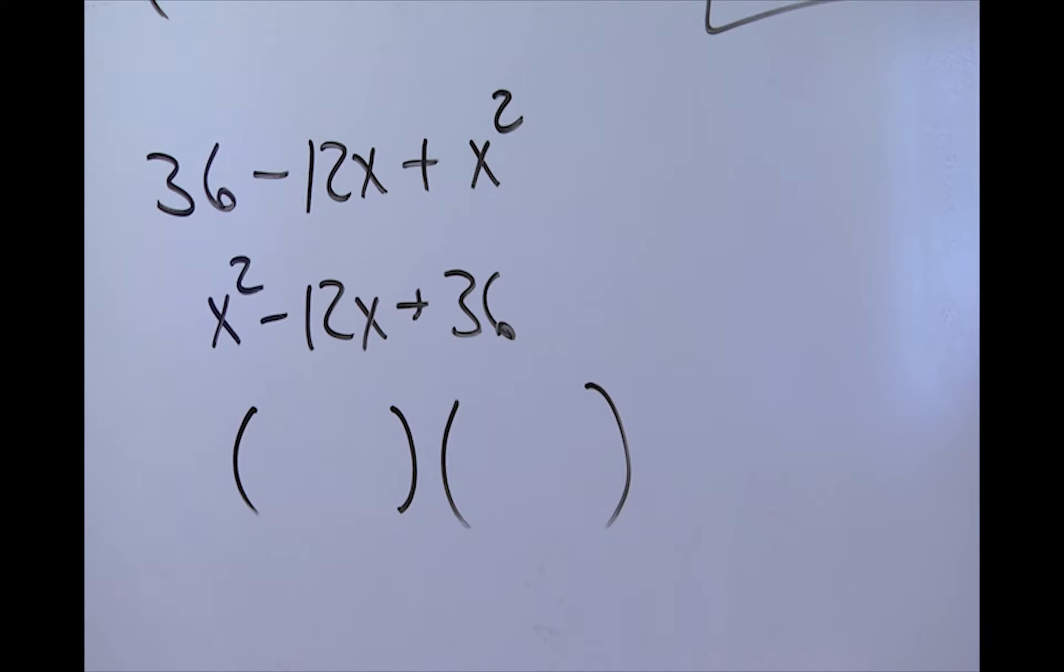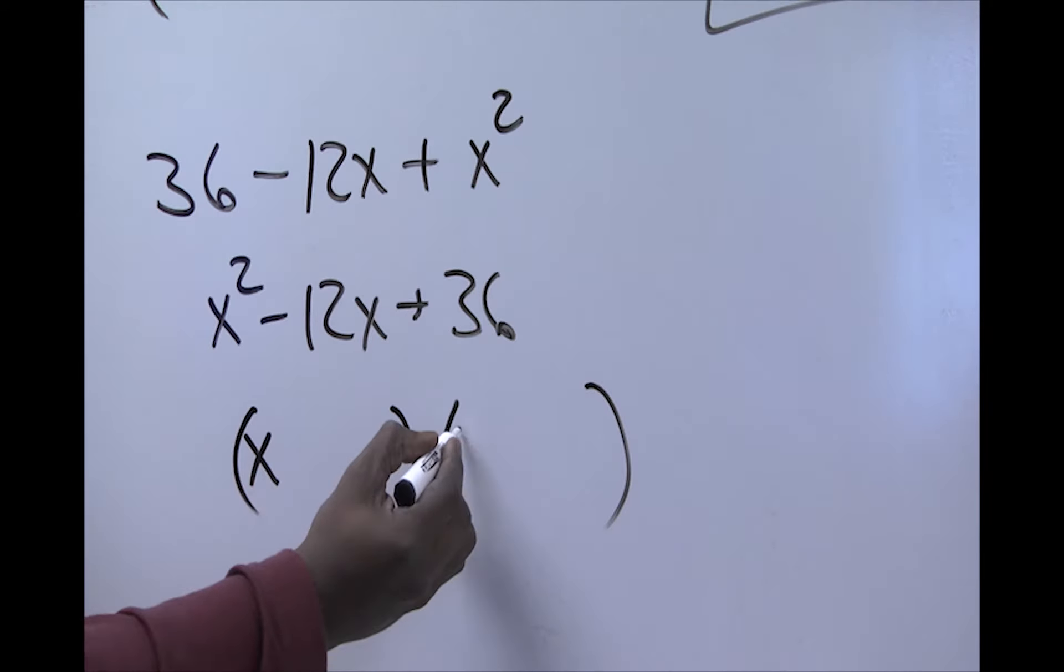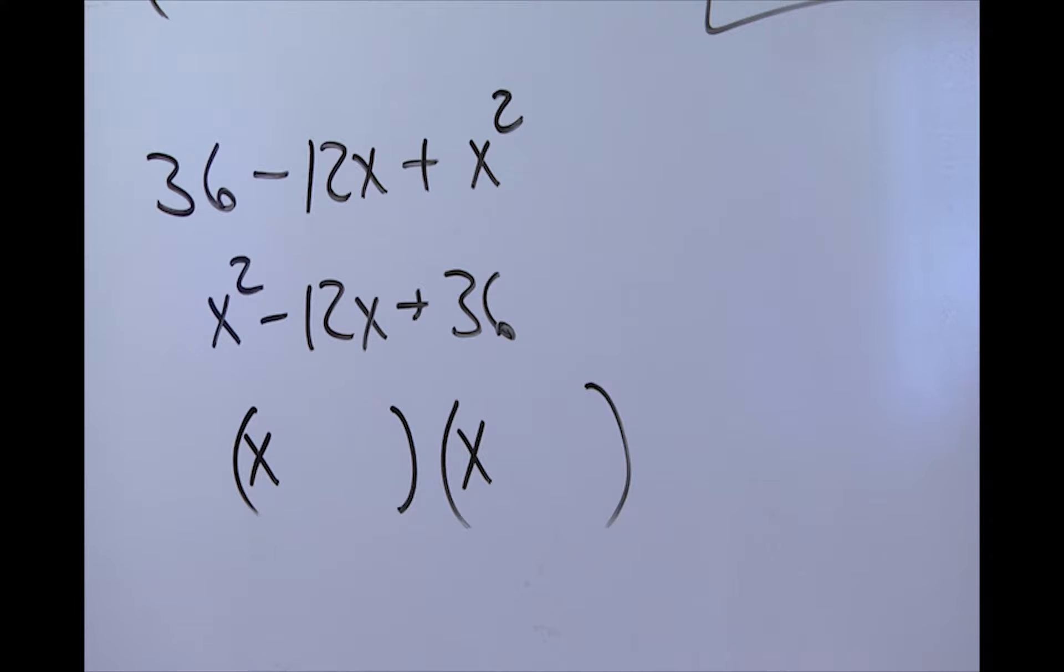What makes x² a perfect square? I know it is going to be x times x. And 36, I know for sure it is a perfect square. And that would be 6 times 6. So, that is what we are going to put on the latter part.